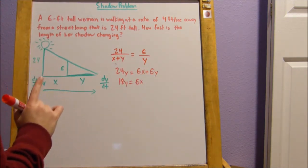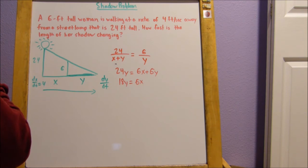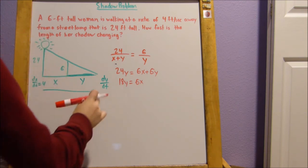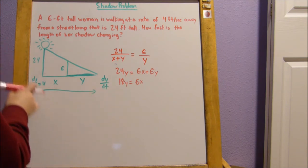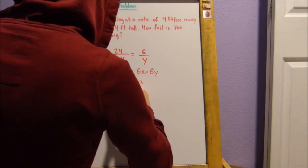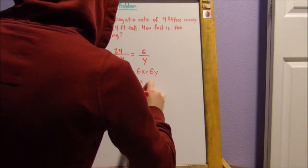Now, this is the part where you choose whether you should divide by 18 or 6. But you know that we're trying to solve for dy over dt. We already know what dx over dt is. So what we're going to do is we're going to isolate y. So we're going to divide by 18. So y equals 1 third x.